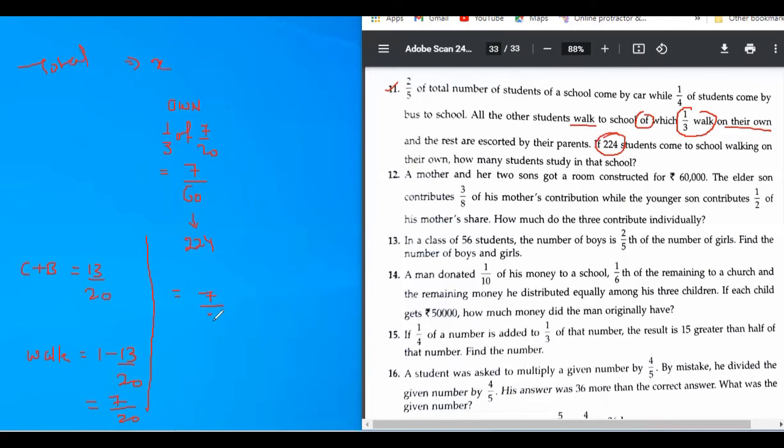Seven upon sixty into X equals to 224. And then we move seven upon sixty to the other side. Sixty upon seven. Seven cancelled with 224, so it's thirty-two. Thirty-two times sixty is 1920. So X equals to one thousand nine hundred and twenty. That was the total number of students in the school.